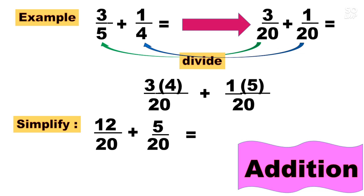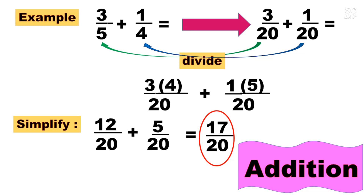As you can see, we now have the same denominator — it has become a similar fraction. So all we do is add the numerators: 12 plus 5 equals 17 over 20. Our final answer is 17 over 20. That is how to add dissimilar fractions with different denominators.